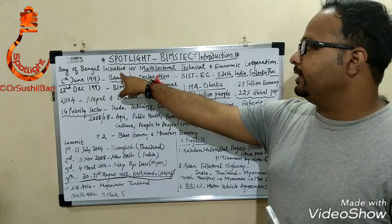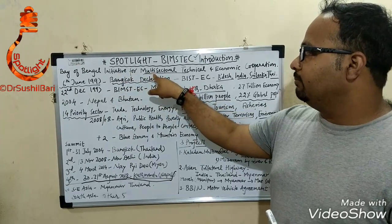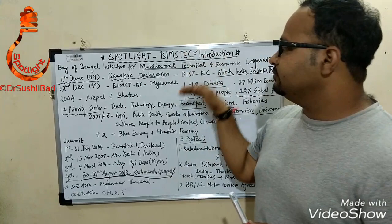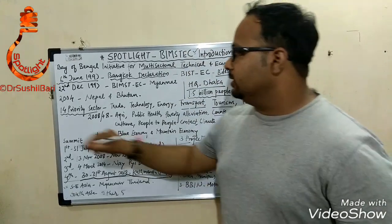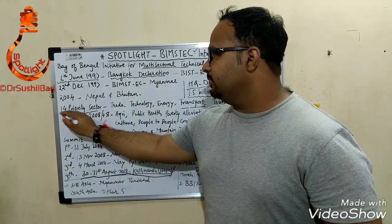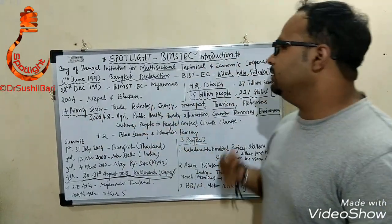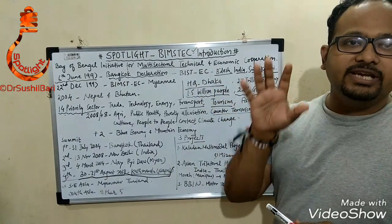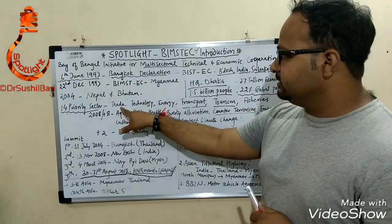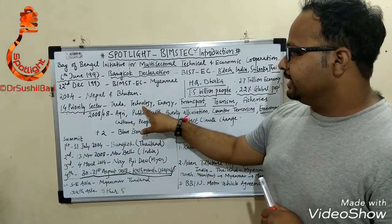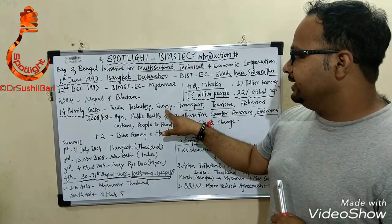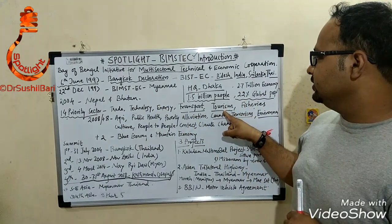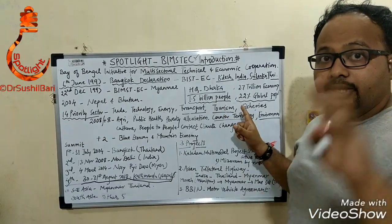The name 'multi-sectoral' makes clear that BIMSTEC works on priority sectors. Initially there were six priority sectors: trade, technology, energy, transport, tourism, and fisheries.